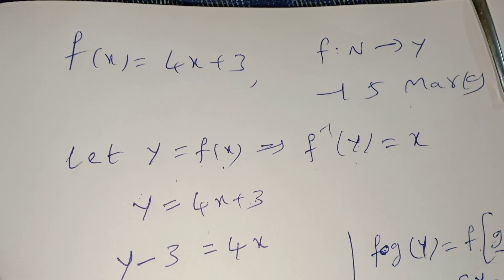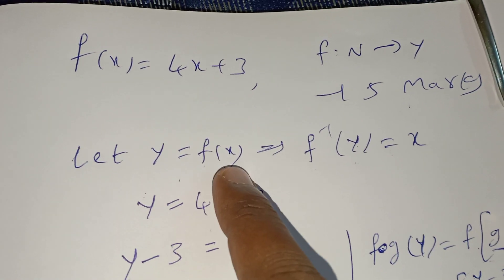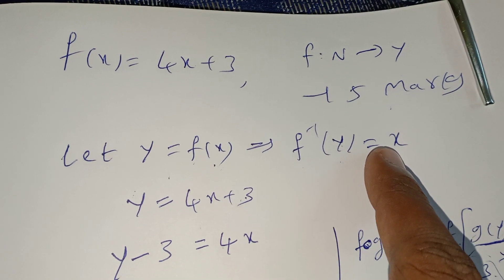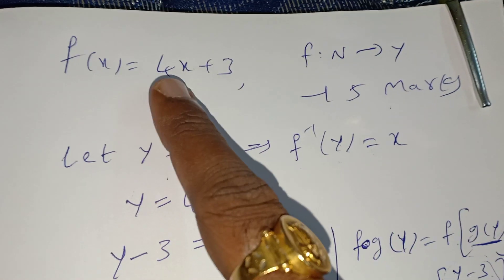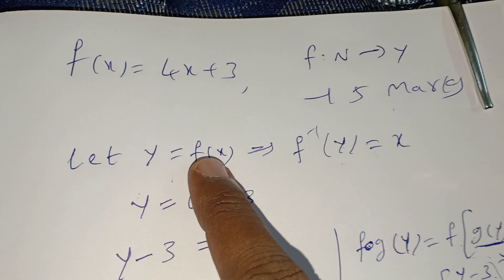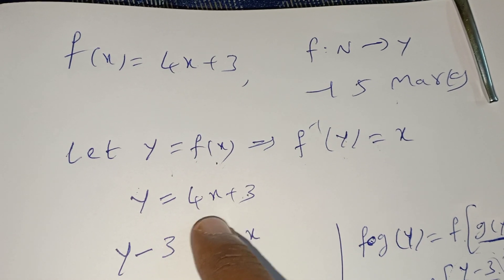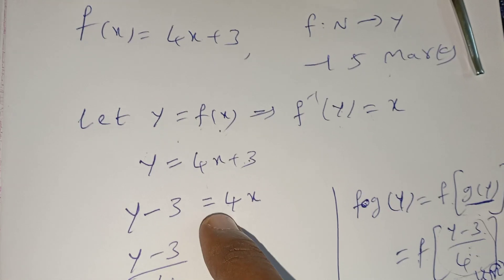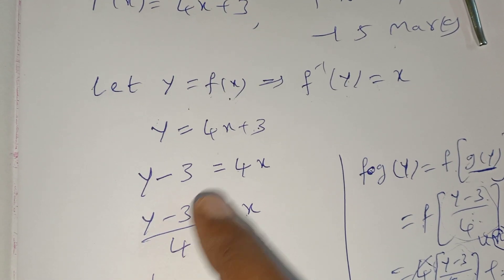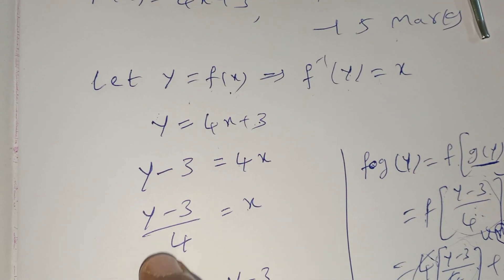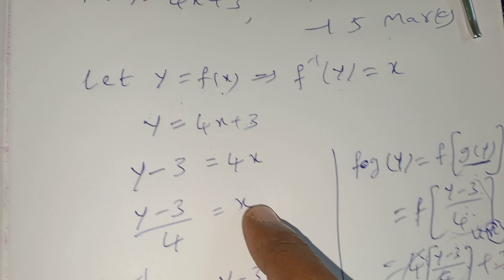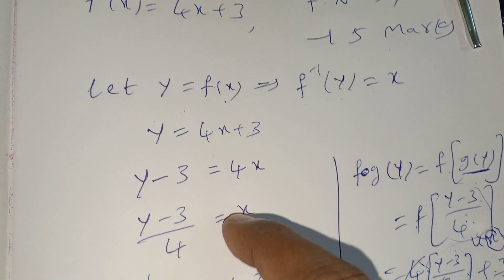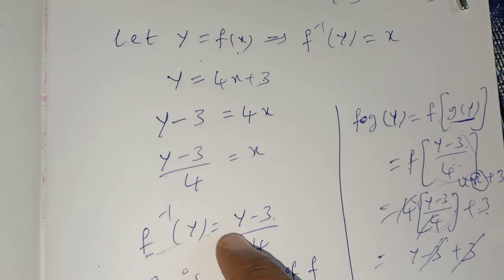Consider y = f(x). Transfer f to the left-hand side: f⁻¹(y) = x. We know f(x) = 4x + 3, so substitute: y = 4x + 3. Transfer 3 to the left-hand side: y - 3 = 4x. Transfer 4 to the left-hand side: (y - 3)/4 = x. Since x means f⁻¹(y), we get f⁻¹(y) = (y - 3)/4.